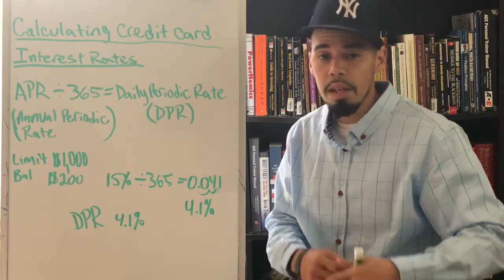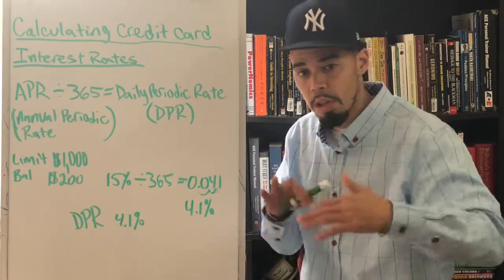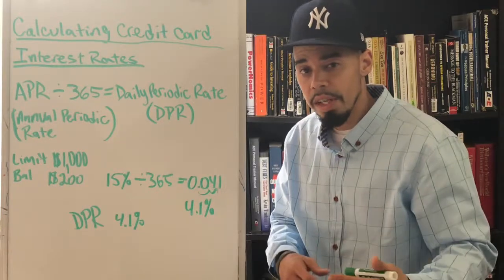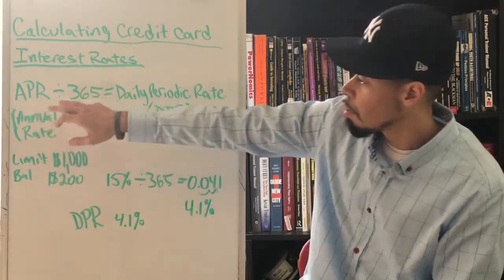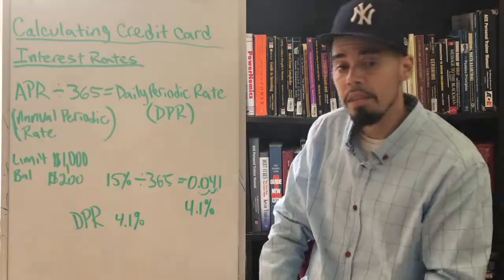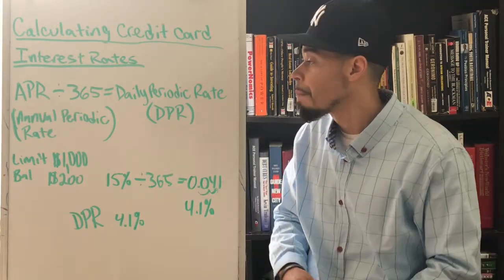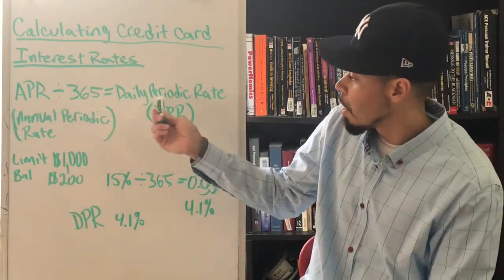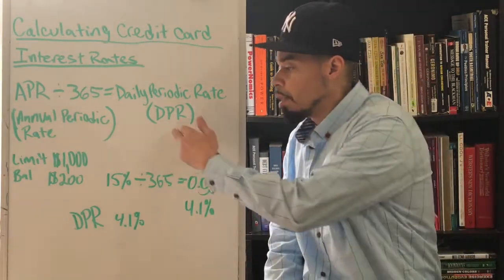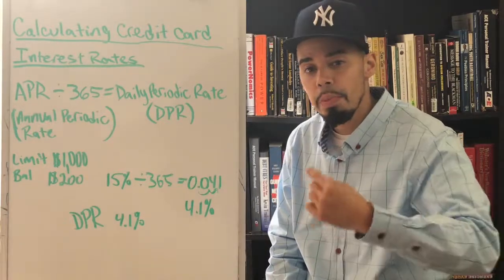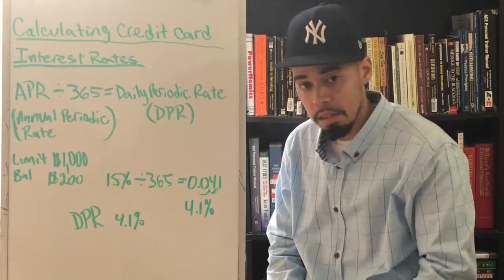It's going to say if it's a variable, which means that it fluctuates, or if it's fixed, which means that it's set. Now you take your APR, you divide it by 365, 365 days in a year. That'll give you a daily periodic rate, DPR.